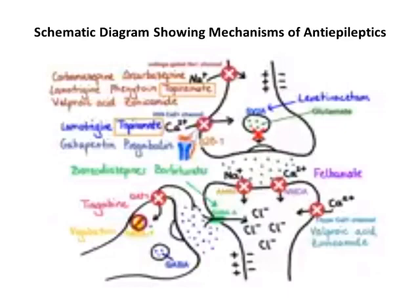Topiramate also inhibits NMDA (N-methyl-D-aspartate) receptors, which are responsible for calcium influx. Low voltage-gated calcium channels can be inhibited by valproic acid, zonisamide, and ethosuximide. Tiagabine blocks the reuptake of GABA back into the nerve terminals, thereby blocking its transport out of the synapse. On the other hand, vigabatrin blocks the enzyme GABA aminotransferase, which is responsible for the degradation or metabolism of GABA — that is how it enhances GABAergic transmission.